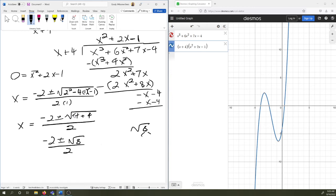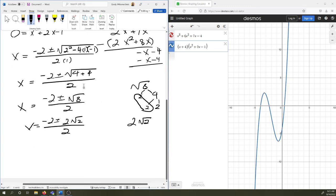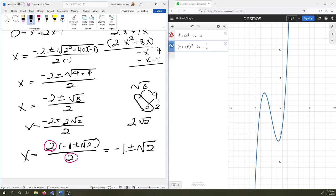So negative 4 plus or minus the square root of 8, over 2. Let's work with the square root of 8 just a little bit. I'm going to do a factor tree. And when you have a tree, you pick pairs. So I can make this 2 square root of 2. So 2 times 2 times 2 gives me 8. And then we can factor out a 2 on top. So let's factor out a 2 left with negative 1 plus or minus the square root of 2 all over 2. And then I have a 2 on the top and the bottom. That will reduce. So I'm left with negative 1 plus or minus the square root of 2.